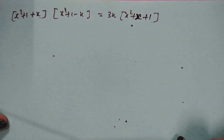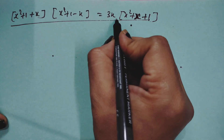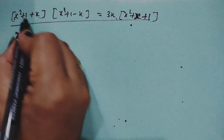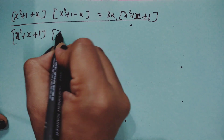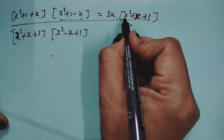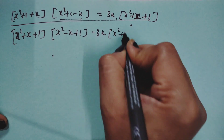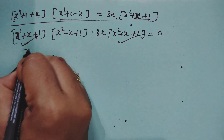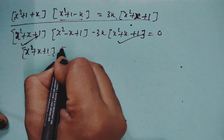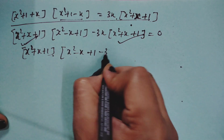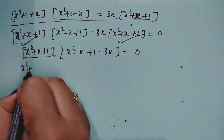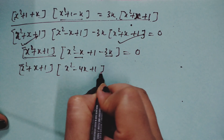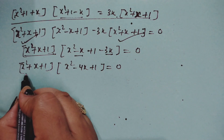Bringing everything to the left: (x² + x + 1)(x² − x + 1) − 3x(x² + x + 1) = 0. Factoring out (x² + x + 1): (x² + x + 1)(x² − x + 1 − 3x) = 0, which gives (x² + x + 1)(x² − 4x + 1) = 0.